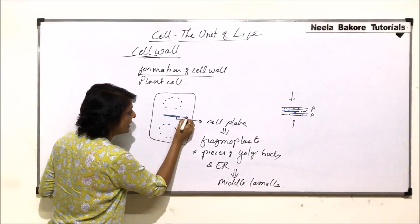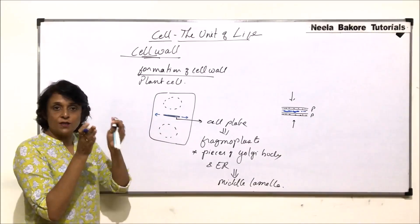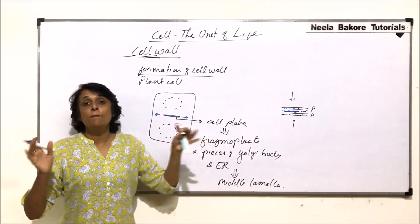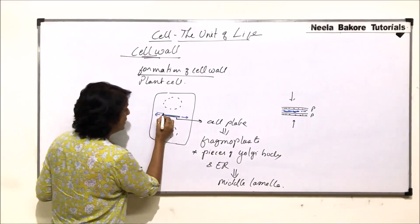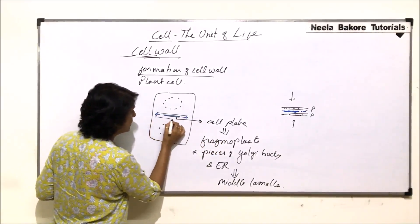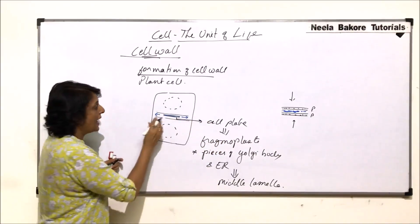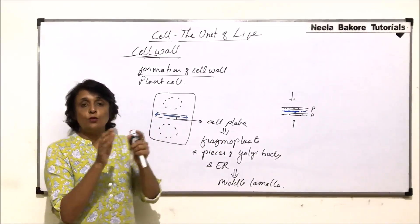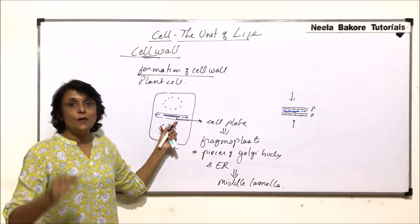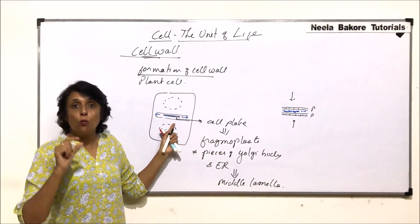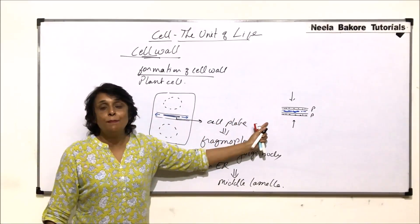That means here, if we change this, the cell plate now will get replaced by the middle lamella and this middle lamella is going to grow from the center part towards the periphery. On either side here is primary layer and here is also primary layer. Growth is from the center towards the periphery. So this structure will now become the cell wall.